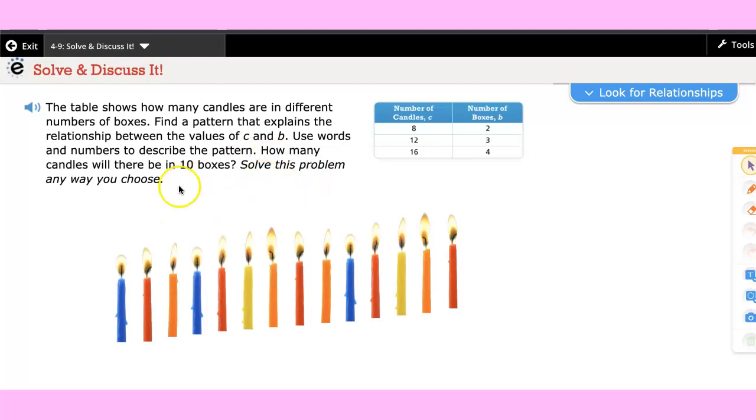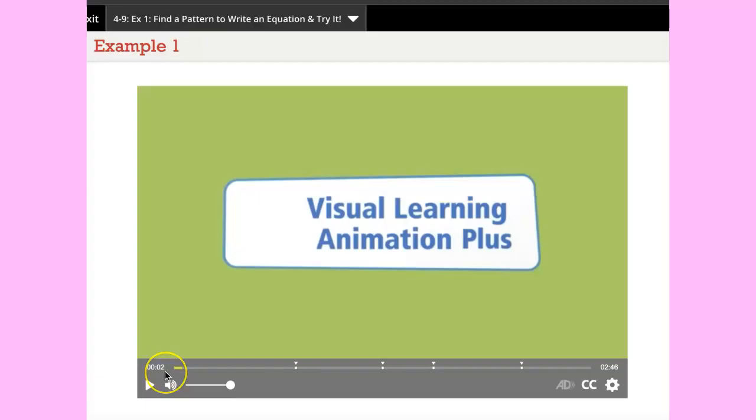How many candles will there be in 10 boxes? Solve this in any way you like. Looking at the table, the number of candles is 8, then the number of boxes is 2. Number of candles is 12, the number of boxes is 3. And if you have 16 candles, then you're gonna have four boxes. I want you to solve it in any way you like, draw a picture. But this time you have to work it on your own.